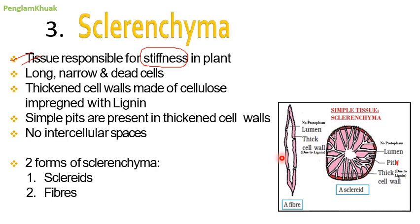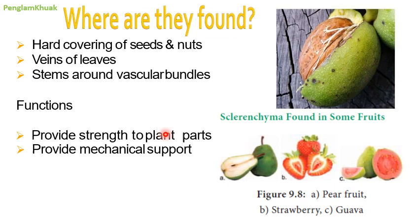There are two types of sclerenchyma. Sclerenchyma cells are found in the hard covering of seeds and nuts, veins of leaves, and around vascular bundles (which include xylem, phloem, and cambium). Their function is to provide strength and mechanical support to plant parts. They are also found in the outer covering of pear fruit (naspati), strawberry, and guava.